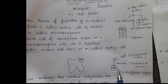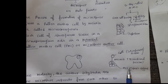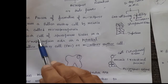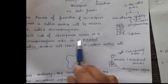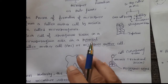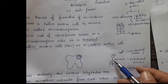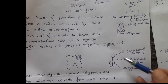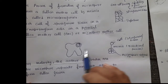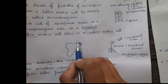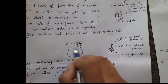These 4 microspores together are called the microspore tetrad. So from sporogenous tissue, through meiosis division, the microspore tetrad is formed. Each cell of the sporogenous tissue acts as a potential pollen mother cell and microspore mother cell, and this is what we read in the definition.